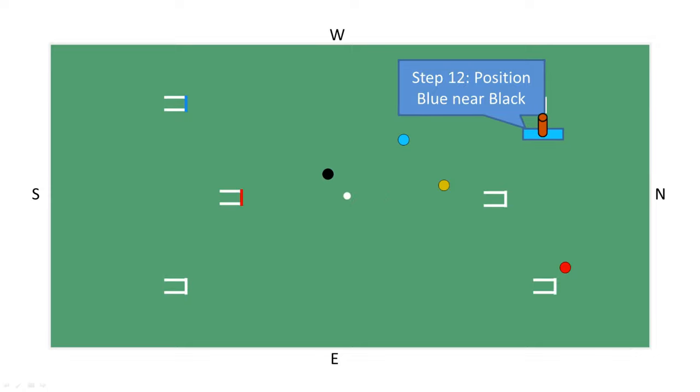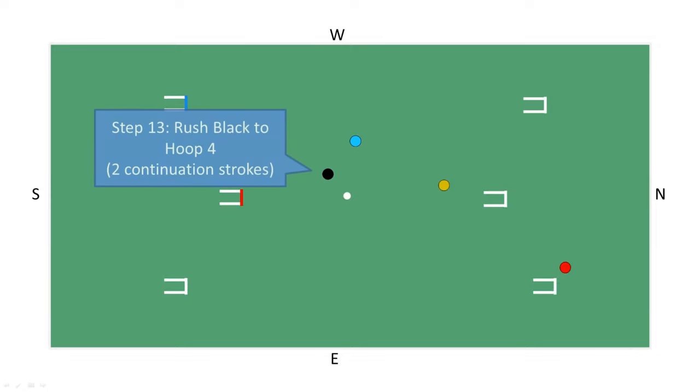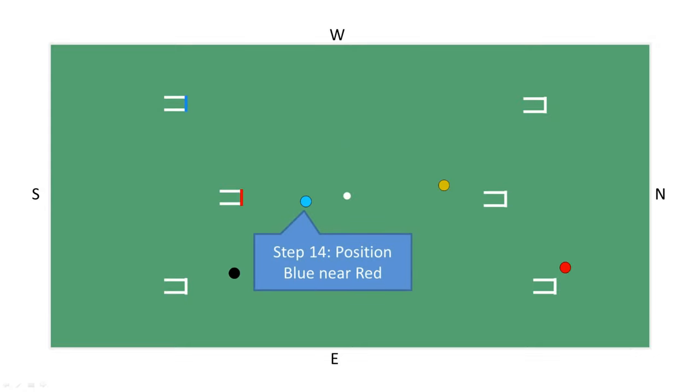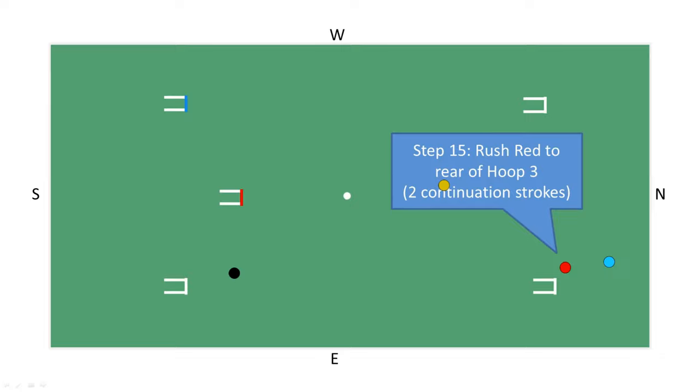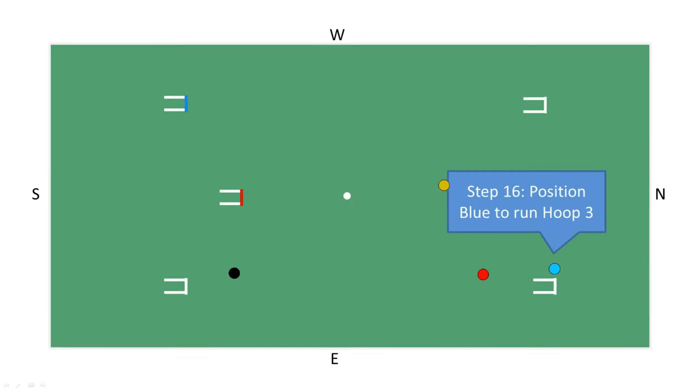It next positions itself near black and then rushes black to the front of hoop 4, a pioneer position. To be sure of having more than one ball to use at hoop 3, blue next positions near red and then rushes red into an escape position just past hoop 3.